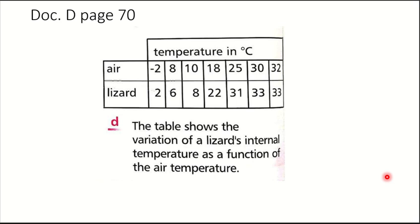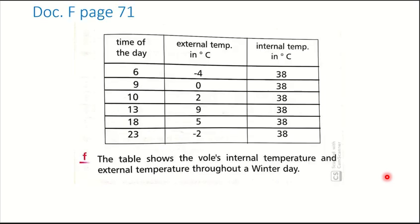Now we will start paragraph 2, which talks about the vole, or a mouse. We will start with document F on page 71. Document F shows the vole's internal temperature as a function of the external temperature. I will ask you to analyze the table of document F.